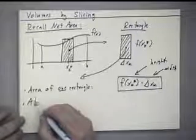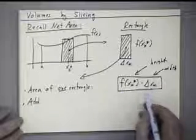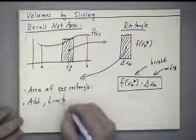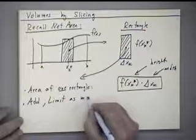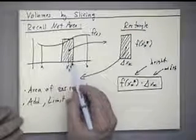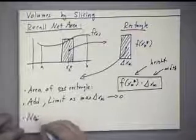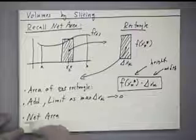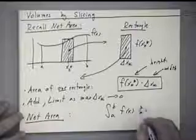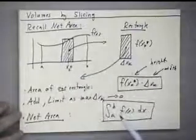In our integration theory, we added all of these up as the sum went from k=1 to n. Then we took the limit as the maximum of the delta x_k's — the widths of the rectangles, which are not necessarily equal width — went to 0. Finally, we got the net area, which in symbolism is the integral of f(x) dx from a to b.